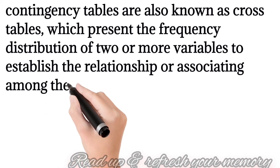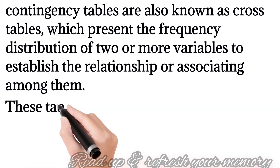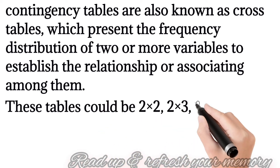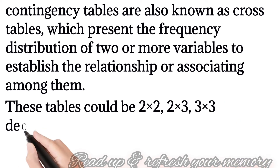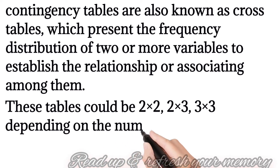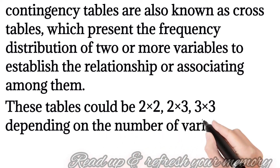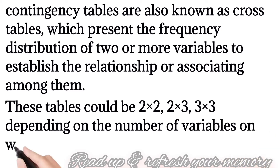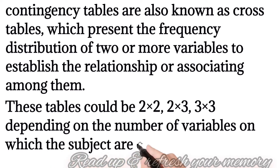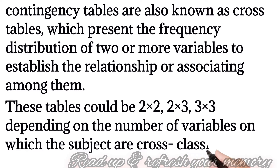A contingency table shows the distribution of one variable in rows and another variable in columns. The table could be 2×2, 2×3, or 3×3 depending upon the number of variables, in which the subjects are cross-classified. The number of subjects in each cell is called cell frequency.